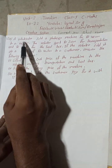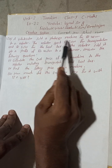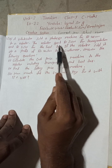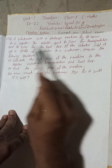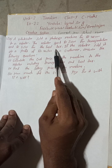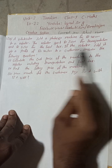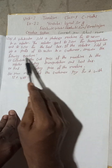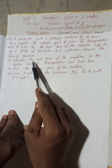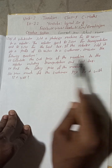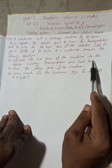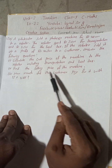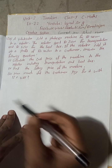So let's begin the solution. A wholesaler sold a photocopy machine for Rs 48,000 to a retailer. The retailer spent Rs 2,000 for transportation and Rs 1,500 for local tax. If the retailer sold it at a profit of Rs 4,500 to a customer, answer the following questions: (1) Calculate the cost price of the machine to the retailer including transportation and local tax. (2) Find the selling price of the machine. (3) How much did the customer pay for it with 13% VAT?